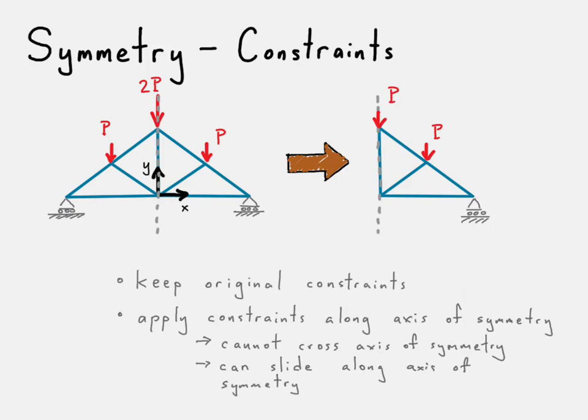And so, in order to represent that, what we are going to do is we are going to create, at each of these nodes here, roller constraints, which do not let it move across that axis of symmetry, but it does allow it to slide along that axis of symmetry.